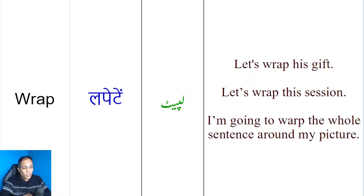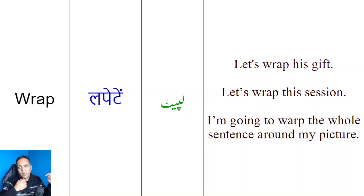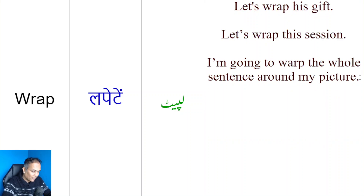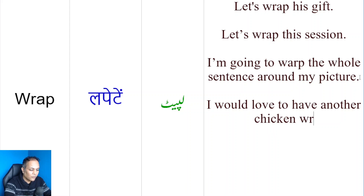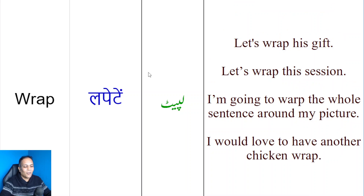Ab dekhte hain kay 'wrap' ko hum as a noun kaise use karte hain. Sab se pahle khaane ki baat kar letay hain. Aap ne chicken wrap, beef wrap ka suna to hoga. Jaise hum keh saktein hain jaise chicken roll paratha hota hai. Toh agar wo tortilla mein banda ho, ya bahar ke mulk mein, usko chicken wrap kaha jayega. Jaise main kehta hoon, 'Let's eat chicken wrap' ya 'I would love to have another chicken wrap.'